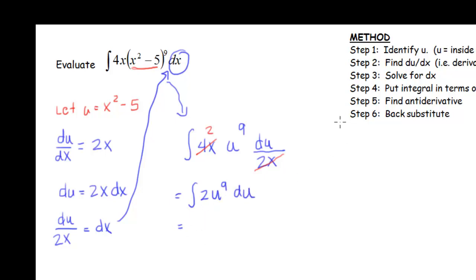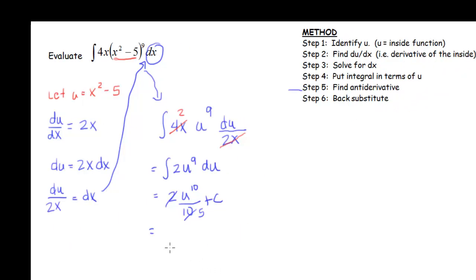Now I'm ready to do step 5, that's the anti-derivative. So I have 2u¹⁰/10 + C. Cancel factors of 2 and I have u¹⁰/5. And then finally substitute back in terms of x. I have (x² - 5)¹⁰/5 + C.